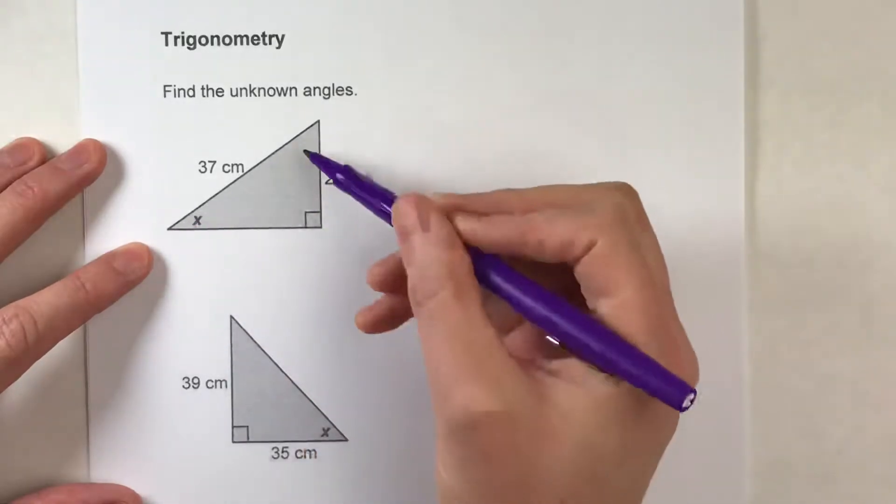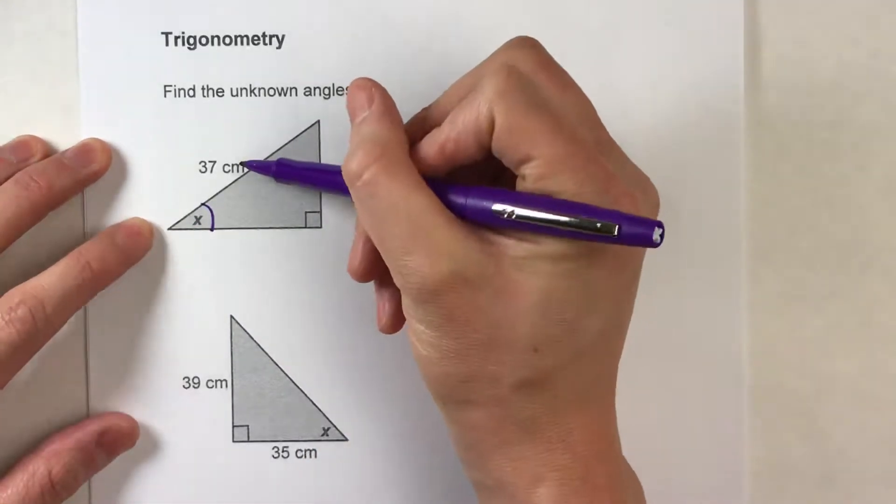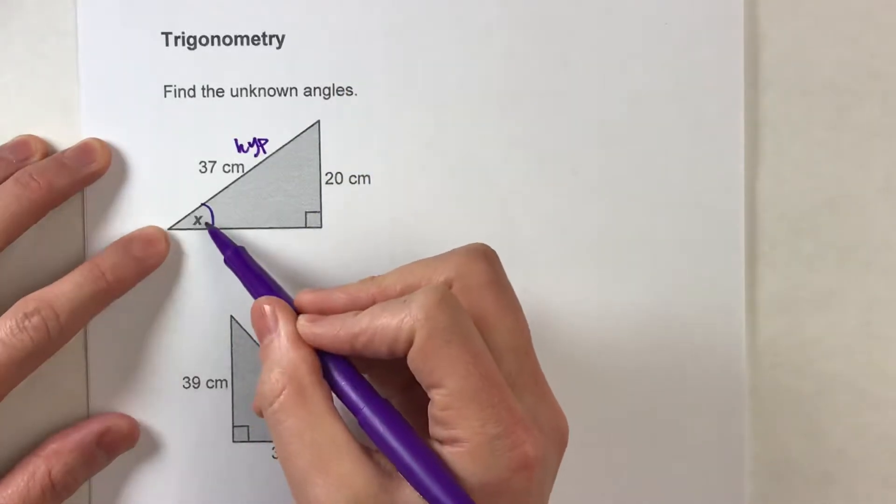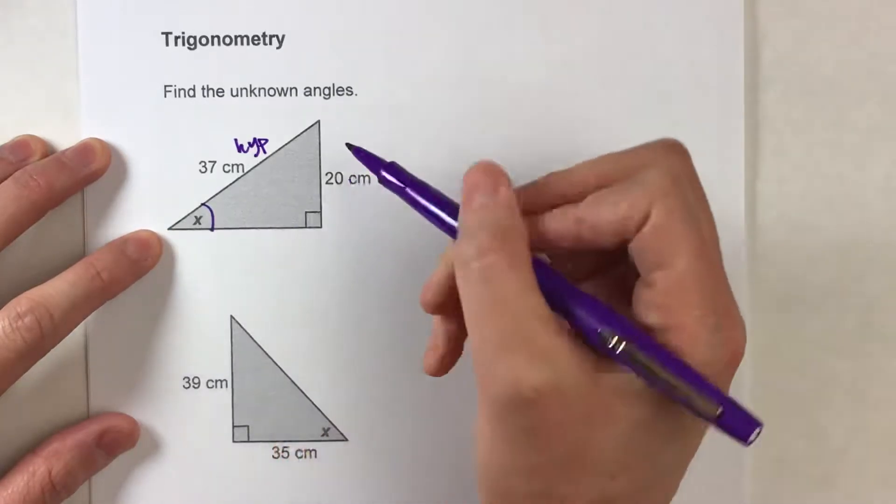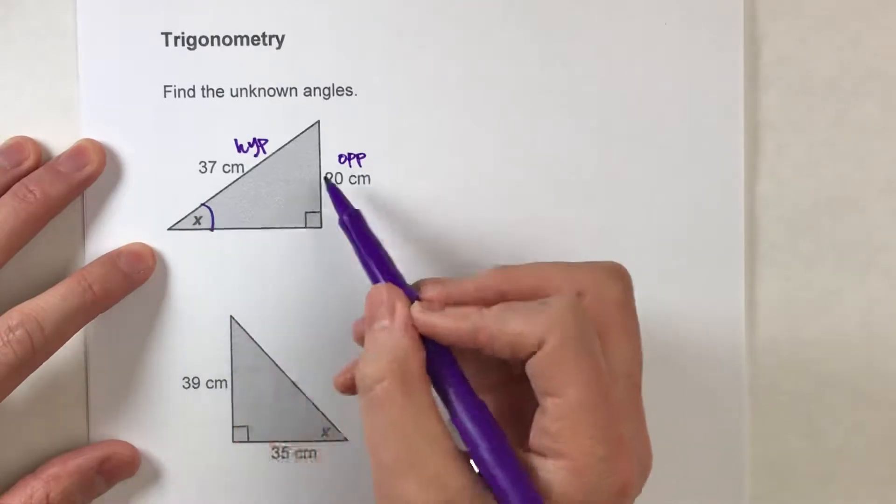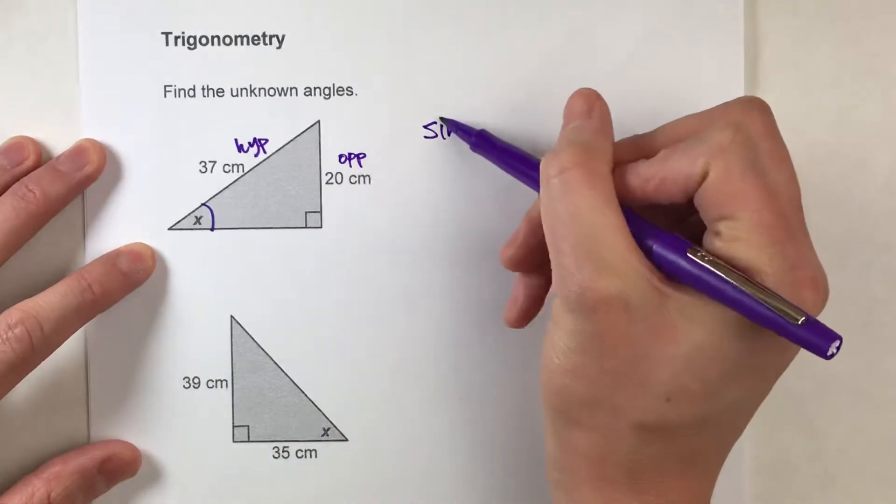In this first triangle here, we're trying to find this angle measure. And we are given the hypotenuse, and we're given one of the legs. And notice, based on the position of this angle, this is the opposite leg. So, since we're working with the opposite leg and the hypotenuse, we're going to be using sine in this case.